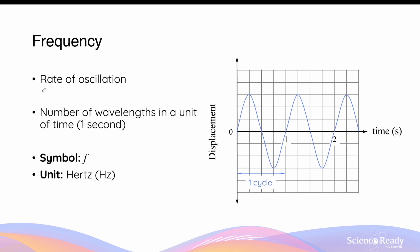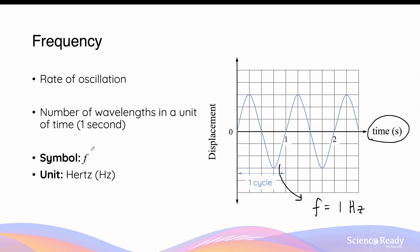Frequency of a wave is defined as the rate of oscillation — more specifically, the number of wavelengths of the wave in a unit of time, most commonly in one second. In simple words, how many wavelengths of the wave can pass through a point in a second? Unlike wavelength, frequency can only be determined on the graph if the x-axis is time, for example seconds, instead of distance. Here you can see that one cycle or one wavelength of this transverse wave completes itself in a span of one second, so the frequency of this wave is equal to one per second, which is also equal to one hertz. The symbol for frequency in physics is lowercase f, and the SI unit is hertz, which is equivalent to per second. A frequency of 10 hertz, or 10 per second, means that 10 wavelengths of a wave can pass through a point every second.